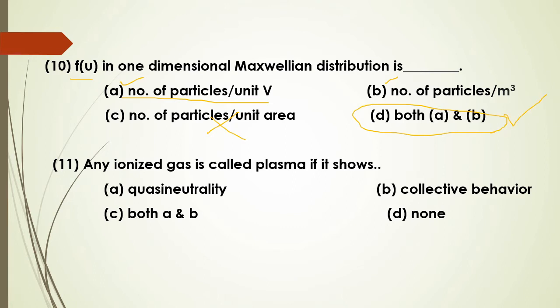Any ionized gas is called plasma if it shows quasi-charge neutrality and collective electromagnetic behavior. The answer is both A and B — plasma shows quasi-neutrality and collective electro-behavior.